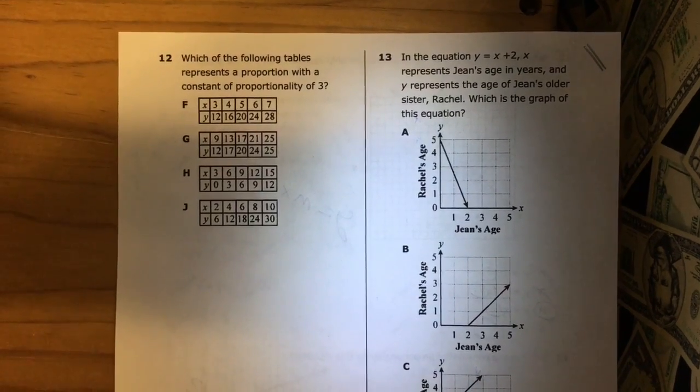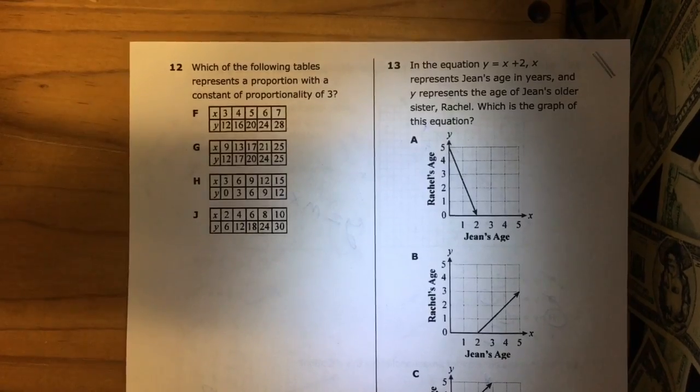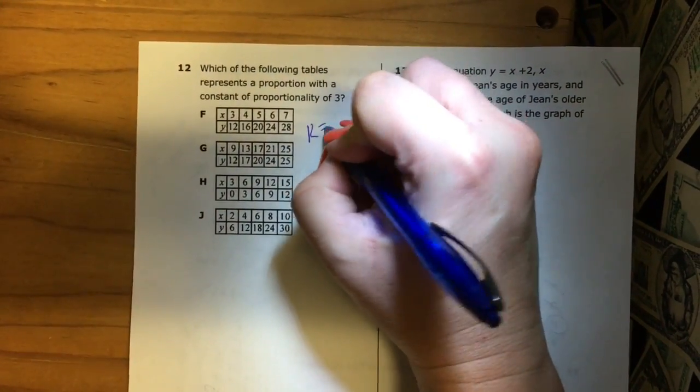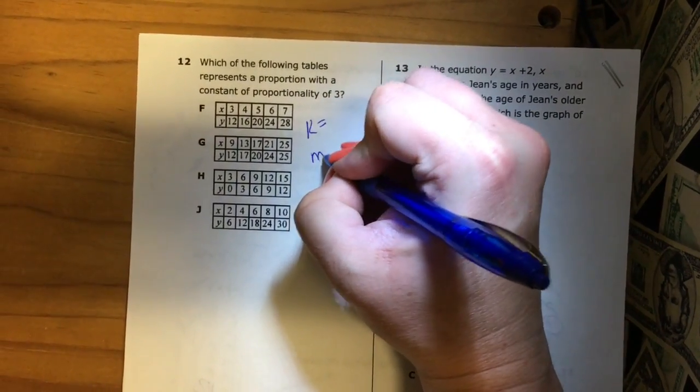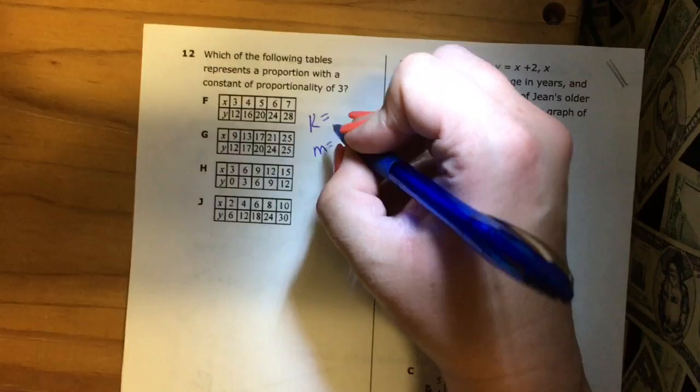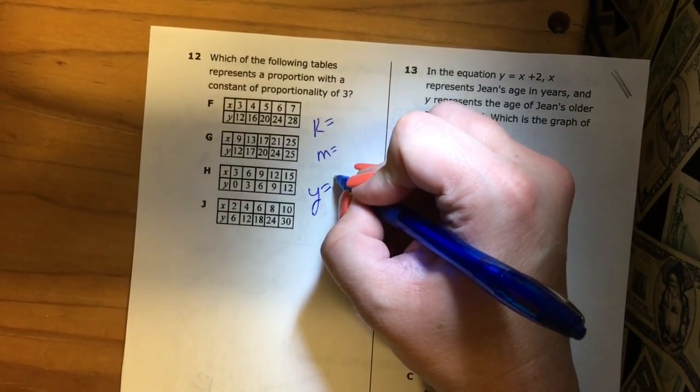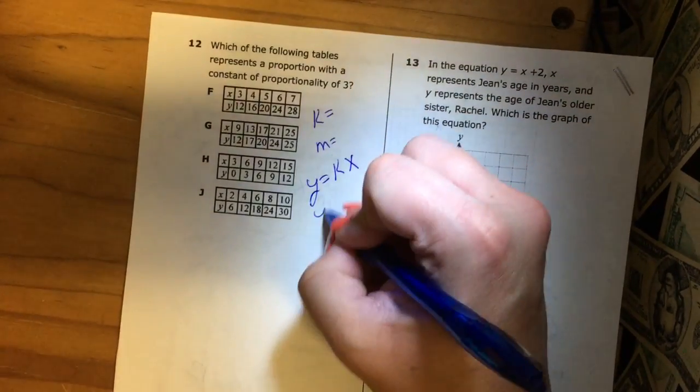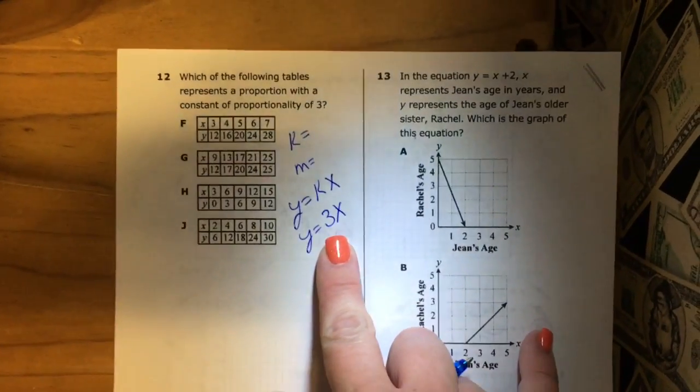Alright, number 12. Which of the following tables represents a proportion with a constant of proportionality of 3? My constant of proportionality is the same thing as my rate of change, and so I'm just multiplying this constant of proportionality or rate of change by X. In this case it's 3. So go ahead and make your own table.